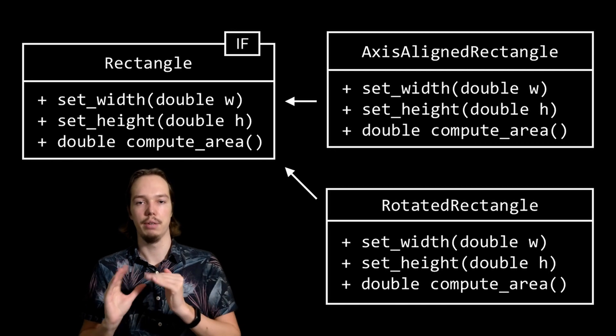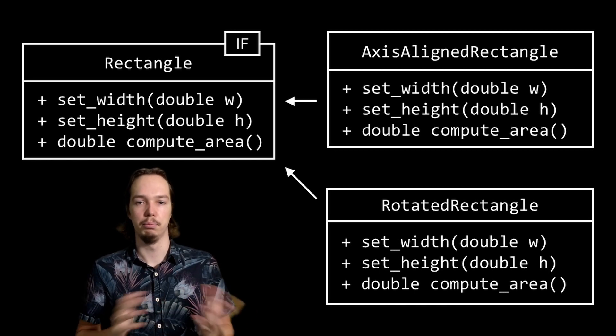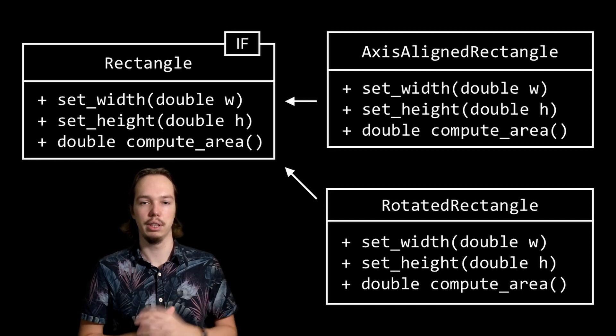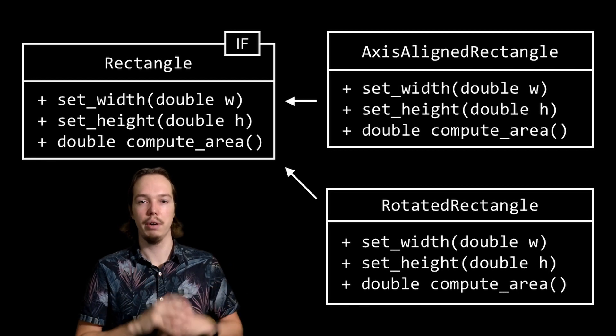Now, you might say this rectangle-square thing is kind of obvious — no proper software engineer would implement a rectangle class if they're building a square. But it's not always that obvious. Let's forget about the square and introduce a new rectangle class: a rotated rectangle. Just like the axis-aligned rectangle, both implement the rectangle interface, offering a set width, a set height, and a compute area.